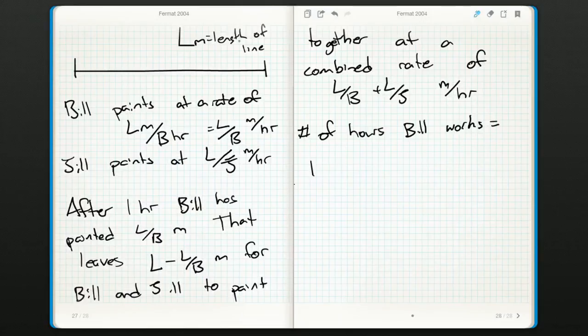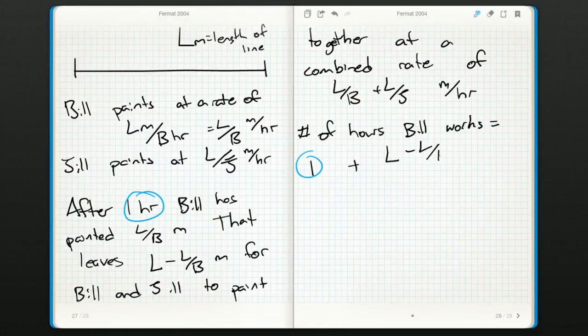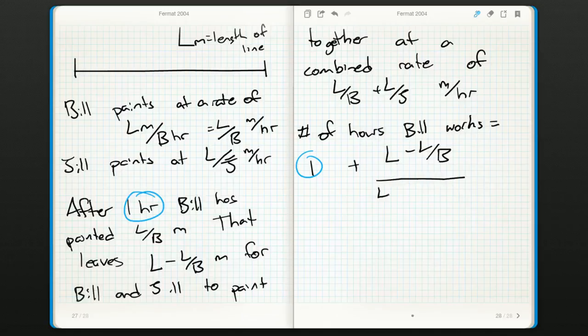And then plus the number of hours it takes to complete the remaining amount. So this is the remaining amount of line that needs to be painted, divided by the combined work rate.